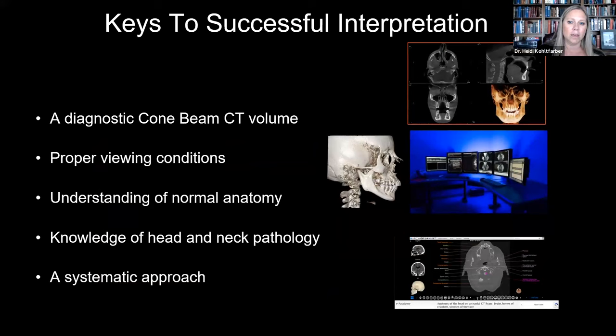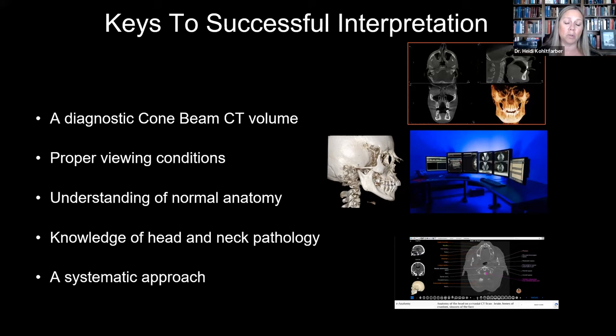Here are some keys to a successful interpretation. First, we have to have a diagnostic CBCT — we want to make sure it's taken at the proper exposure setting for the patient so we can see the details we need. It is possible for CBCTs to be underexposed, and if they're underexposed, we see a lot of noise in the image which can block the details we're interested in seeing.